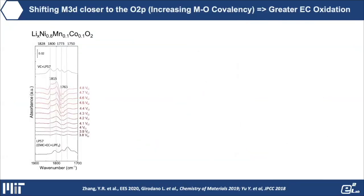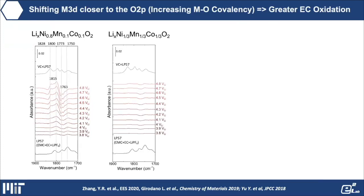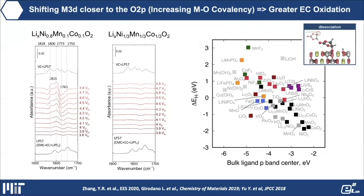We can contrast NMC 811 with NMC 111. The 111 surface is very stable: looking at differential spectra charging all the way from open circuit voltage to 4.8 V, we don't really see any dehydrogenated species. This is very much in agreement with the computed trend or descriptor for dehydrogenation — oxidative dehydrogenation on the surfaces. As we go from nickel-rich compounds to manganese-rich compounds, we decrease the driving force for hydrogen adsorption, consistent with the experimental observations.